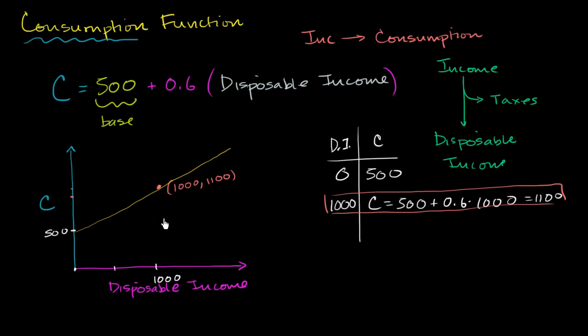If you remember a little bit of your slope, you could view this as your y-intercept, or in this case, your c-intercept, and your slope would be the 0.6. We'll talk more about that in future videos when we dig into the marginal propensity to consume a little bit more.